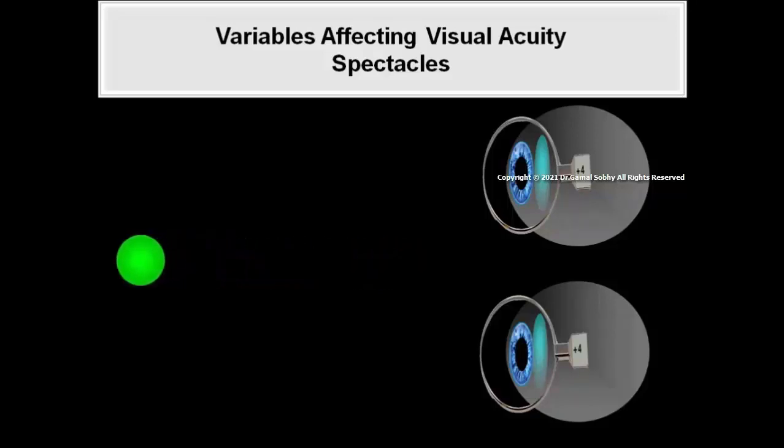Spectacle lenses with a high refractive correction change the direction in which object points appear in indirect vision. This causes changes in perspective and the perception of space.